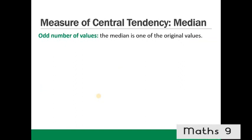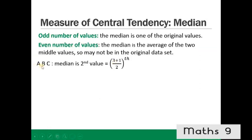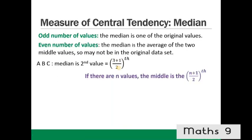If there are an odd number of values, the median is always one of the original values. If there are an even number of values, the median is the average of the two middle values. In general, if there are n values, the middle one will be in position (n + 1) / 2. You always add 1 to the number of points before halving it.